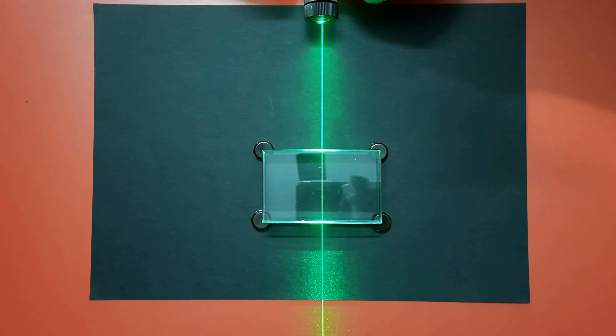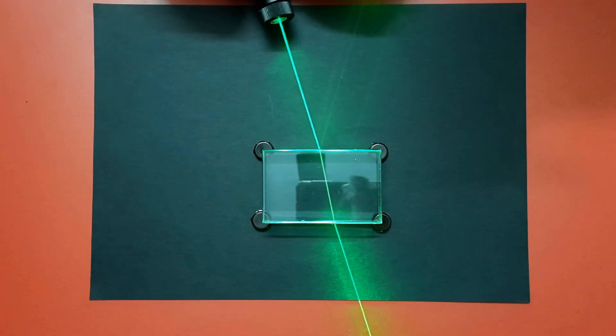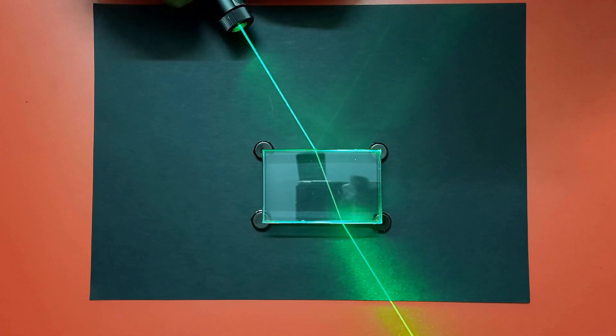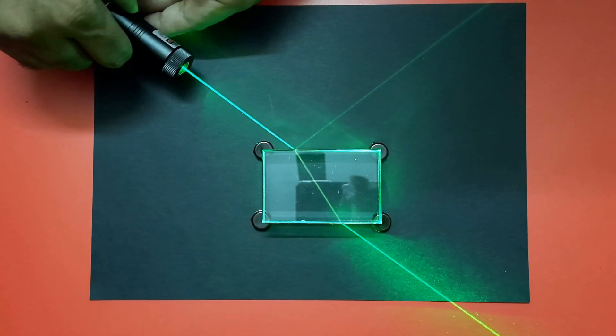Now change the direction of laser beam and increase the angle of incidence. You will observe a slight bending of laser beam towards the normal in the glass slab.